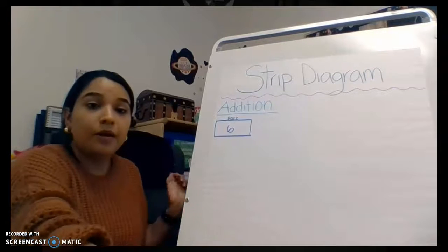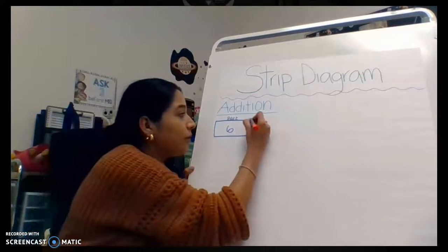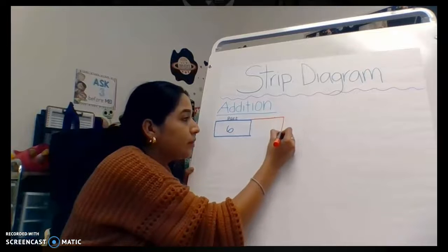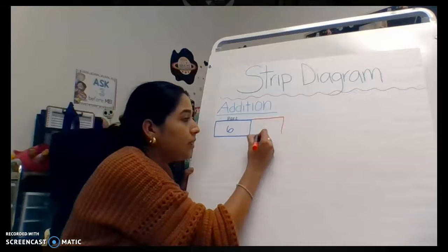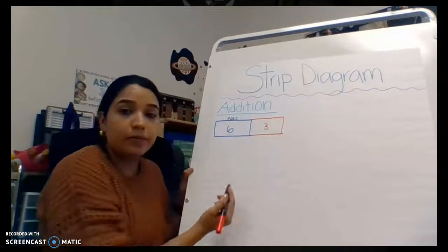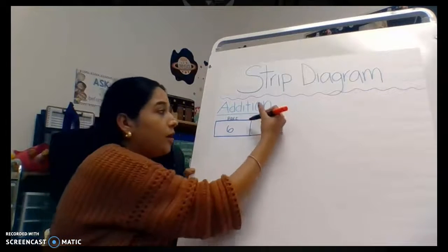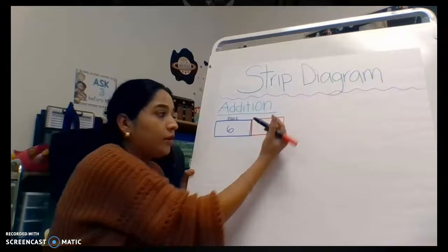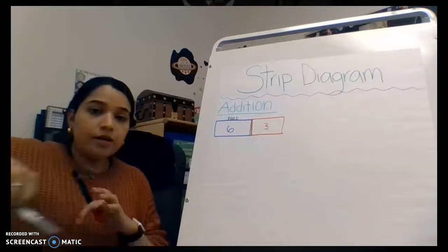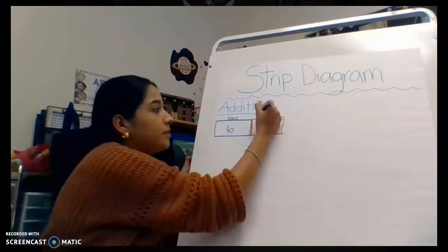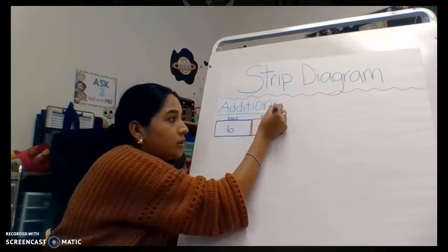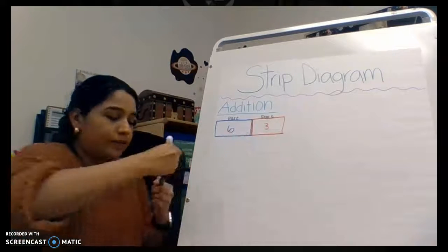In the word problem we also had three red birds, so I'm going to put three right here — a red square for our other part — and label it part. So we have our part and our part.